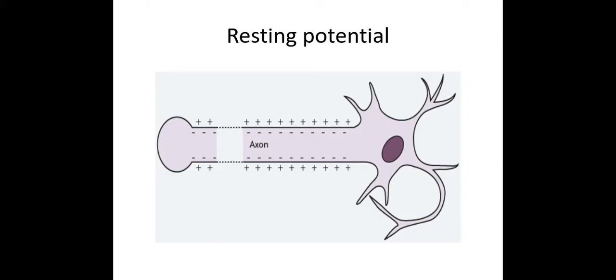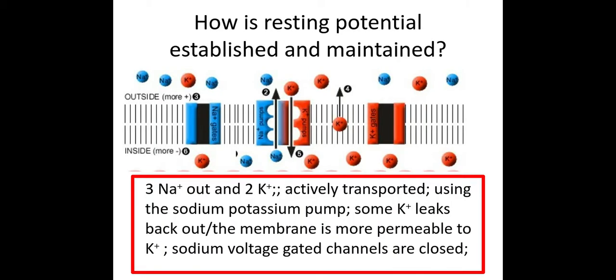So let's have a look at how that is established and maintained. Anything in a red box here is taken directly from the MART scheme. So you do need to be aware that this involves sodium and potassium. Here you can see the outside of the neuron, so this is outside the membrane and here we've got the membrane and then inside of the neuron.